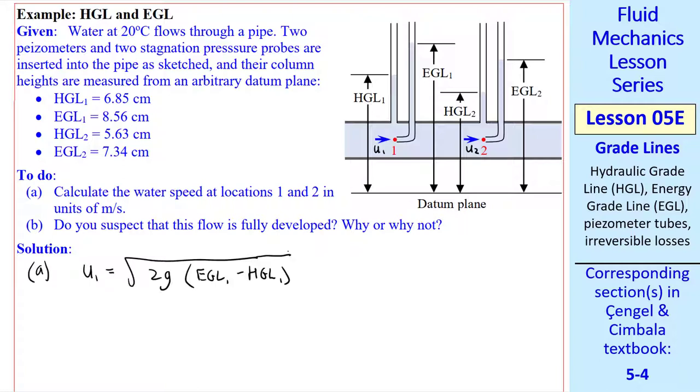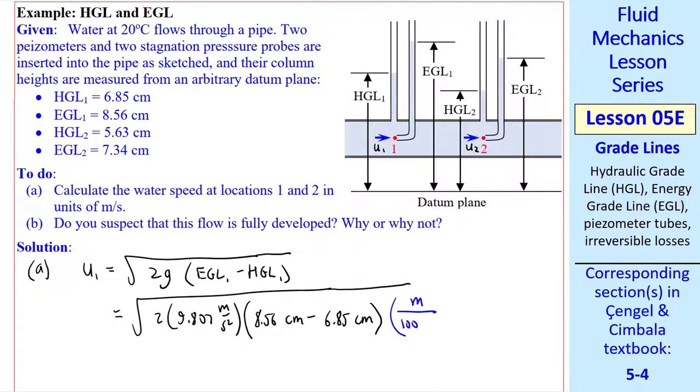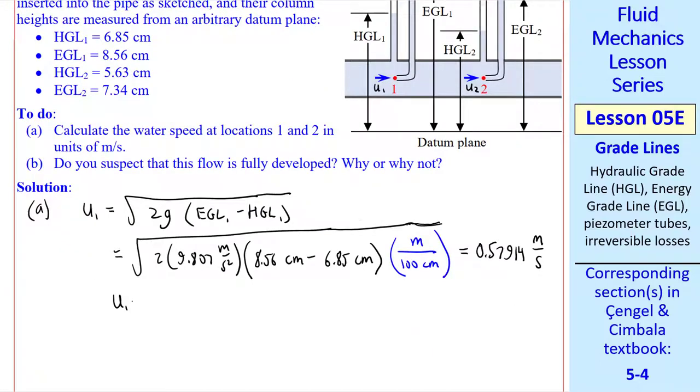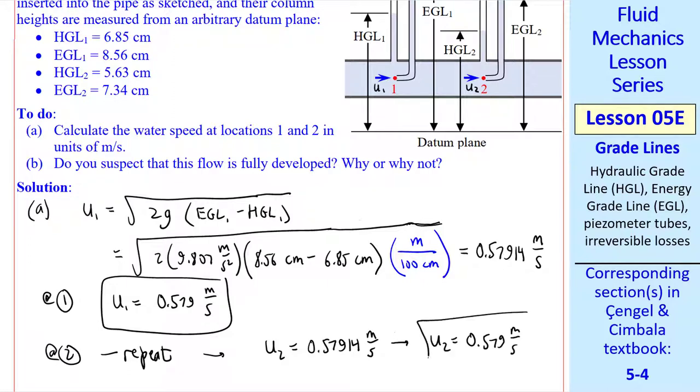Using our above equation, U1 is the square root of 2g times EGL1 minus HGL1. We plug in the numbers, 2g, 8.56 centimeters minus 6.85 centimeters, and then a unity conversion factor all under the square root. I get 0.57914 meters per second. To three digits then, U1 is 0.579 meters per second. We repeat at 2 using these two values instead of these two values, and we get the same answer. U2 is also 0.579 meters per second. That's because the difference between these two is the same as the difference between these two.